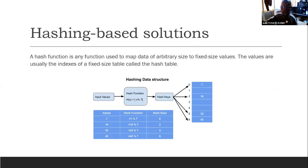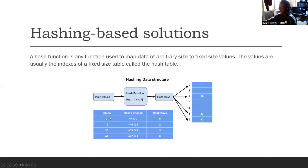After tree-based solutions, we have hashing-based solutions. A hash function is any function used to map data of arbitrary size to a fixed-size value, called the hash key. Imagine we have some values and we want to map them to buckets — here we have seven buckets. The hash function we use is the modulo operator, which generates an index. This index represents the hash key and maps the input value to one bucket of our hash table. This is a simple hashing technique.